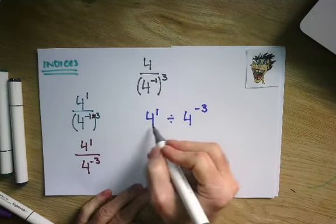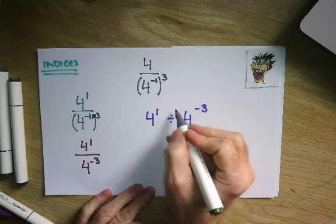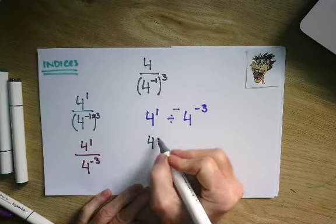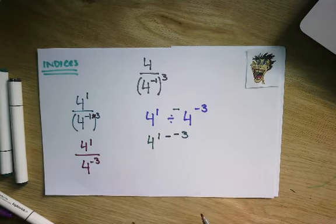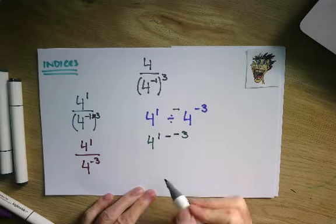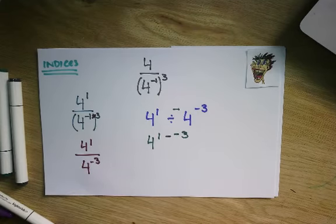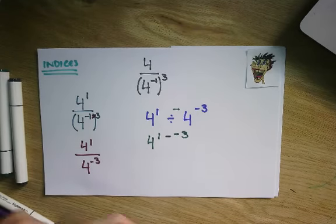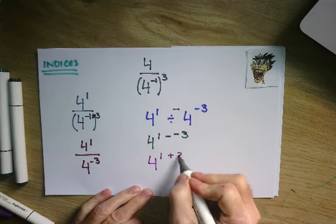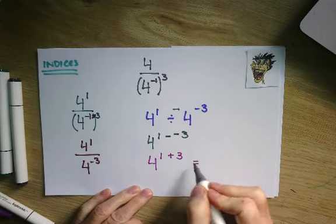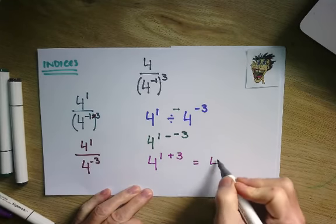When you've got the same bases and you're dividing, you take away. So that's 4 to the 1 minus the minus 3. If I'm going to take away a negative, that makes you feel better. That's how you do these. You add by lifting you up. Minus and minus makes plus.